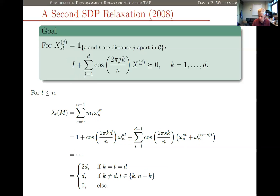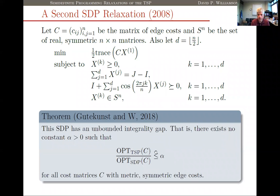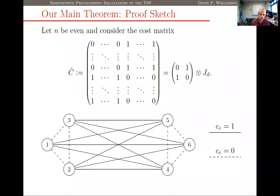The main theorem I want to show you is that this SDP has an unbounded integrality gap: there exists no constant such that the ratio of the cost of an optimal tour to the cost of the SDP optimum is bounded above by that constant. To prove this, we just need to demonstrate one cost matrix — or one family of cost matrices — that is metric and symmetric, such that for any constant, the ratio is not bounded above by it.